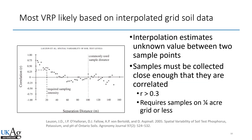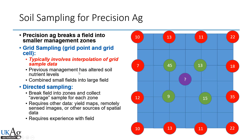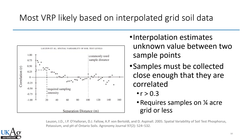This is where we get into trouble with grid sampling — you have to interpolate the values. We have a known value where we collected a sample, and an unknown value in between that we're trying to figure out. We use interpolation to guess the value of that unknown area. But interpolation is a statistical procedure that requires the correlation factor — this r value on the vertical axis — to be at least 0.3. Separation distance is how far apart each sampled point is.